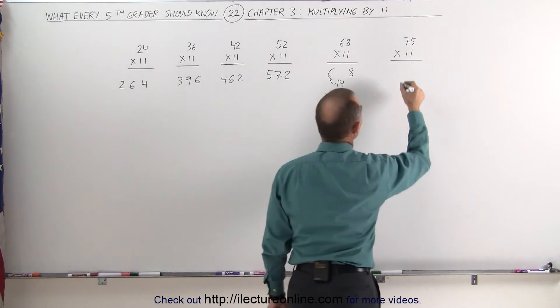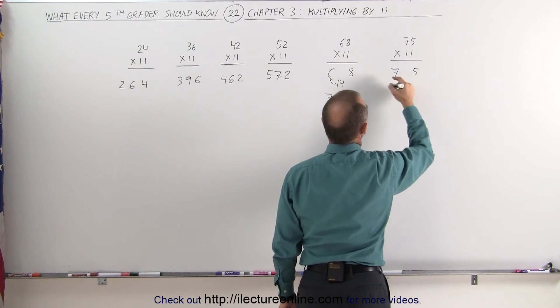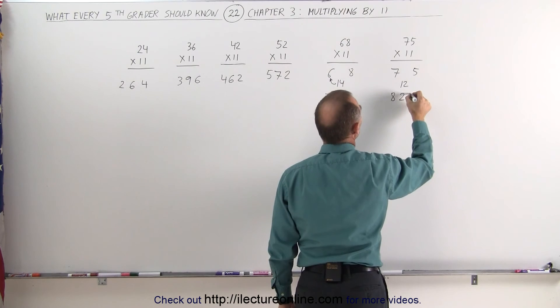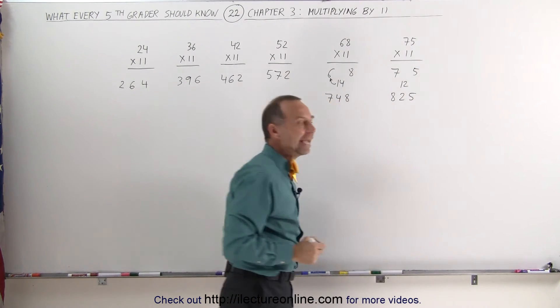Same when we do 75 times 11, you separate the 2. When you add the 2 together, you get 12. You take the 1, add it to the 7, becomes an 8, a 2 and a 5. The answer is 825.